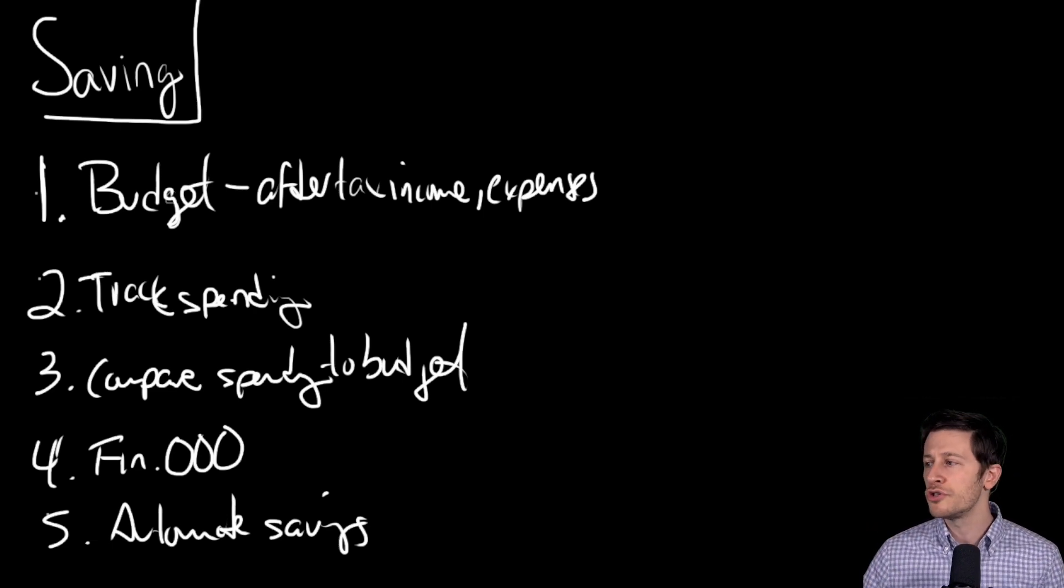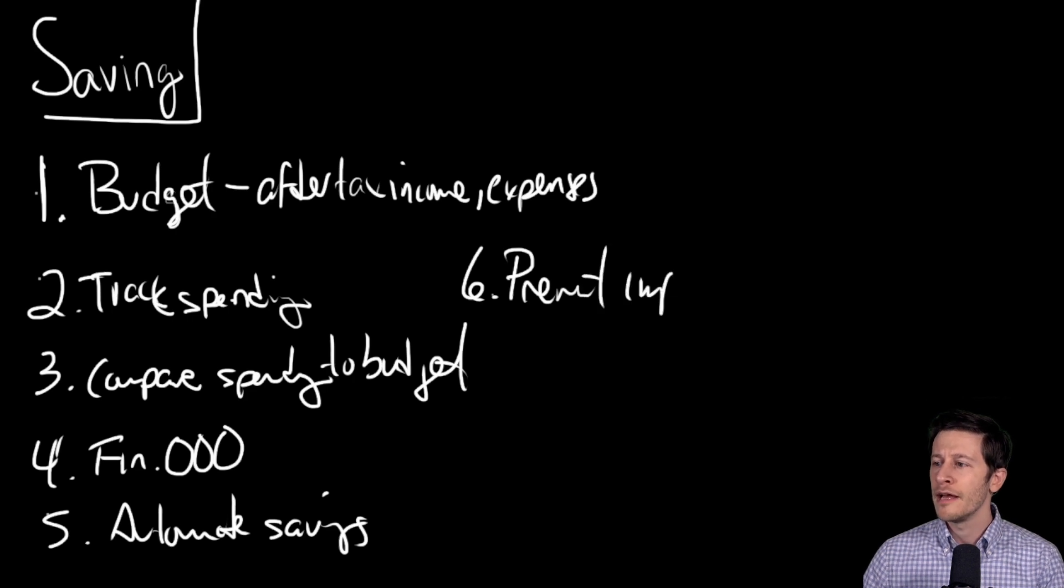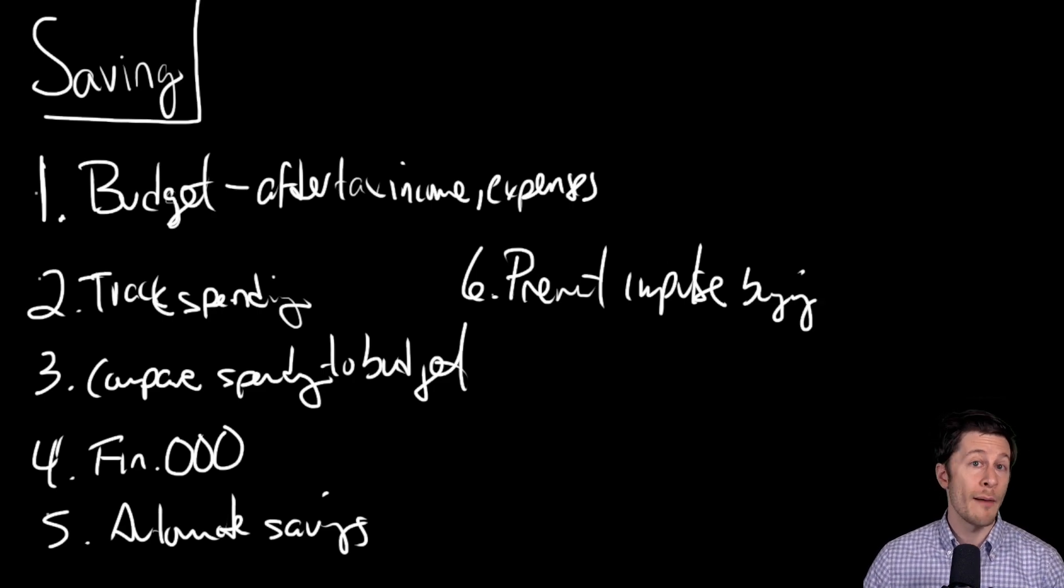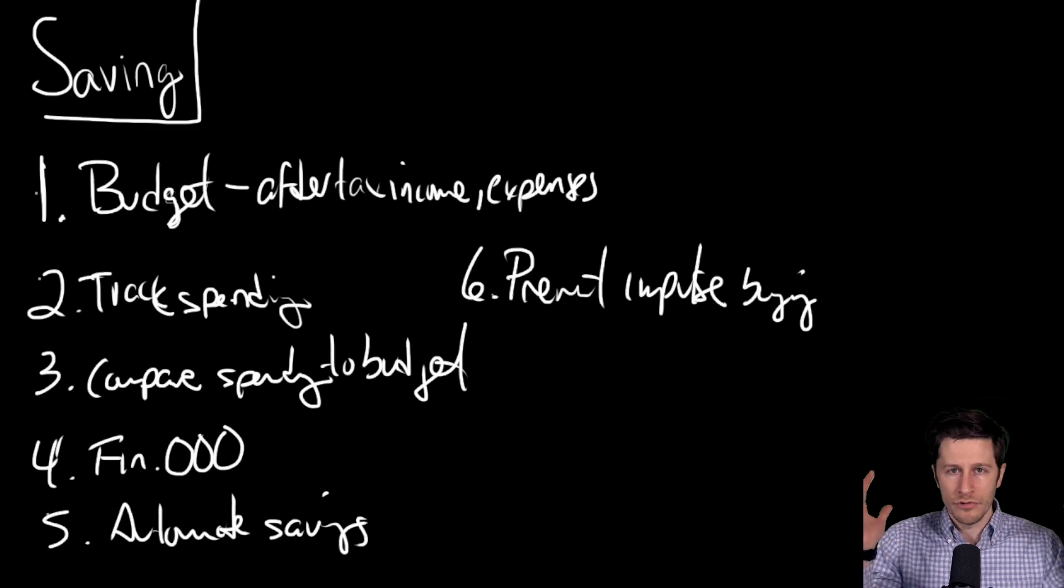Also, it can be good to prevent impulse buying. For some people - I fortunately don't have this issue; I have the opposite problem where I think about a purchase for too long - but some people make impulse buys. They see something at a store or Amazon and just buy it right away. There are a lot of different things that can be said about this. One philosophy that can be useful to people is, unless you're talking about food or you've got a flat tire where you need that, you need to fix that, you need to deal with that...